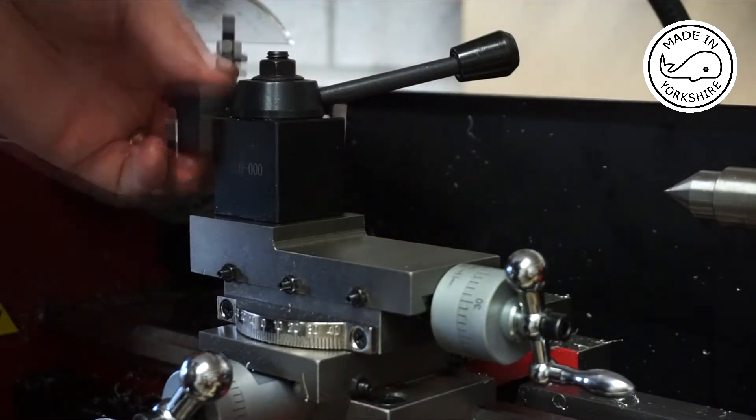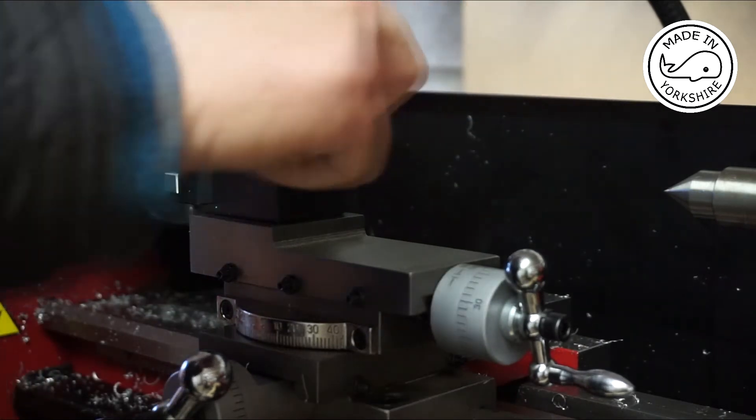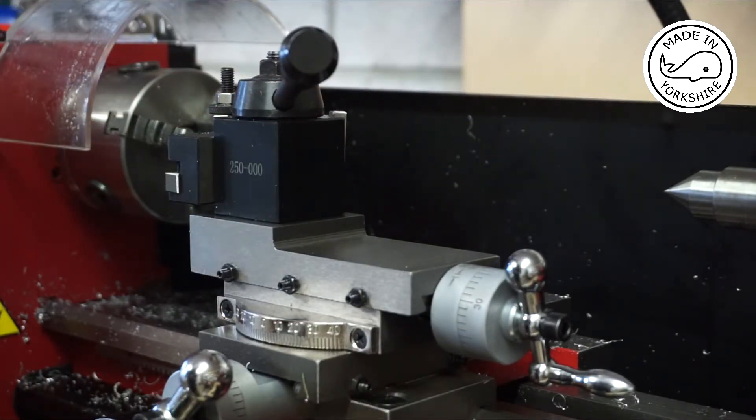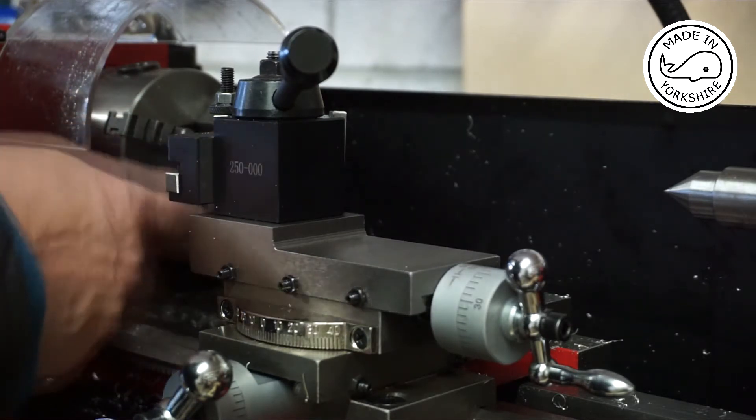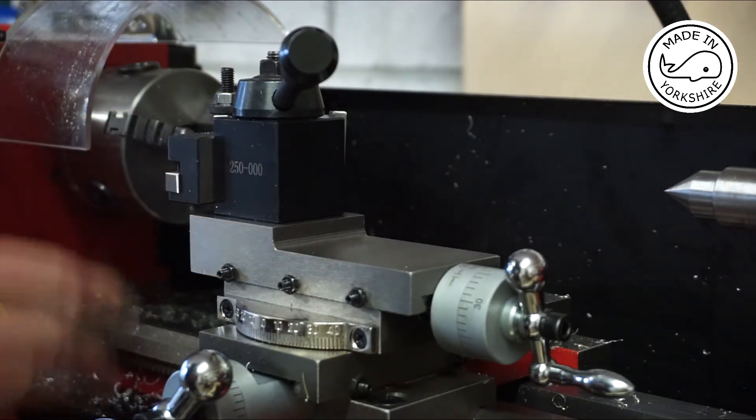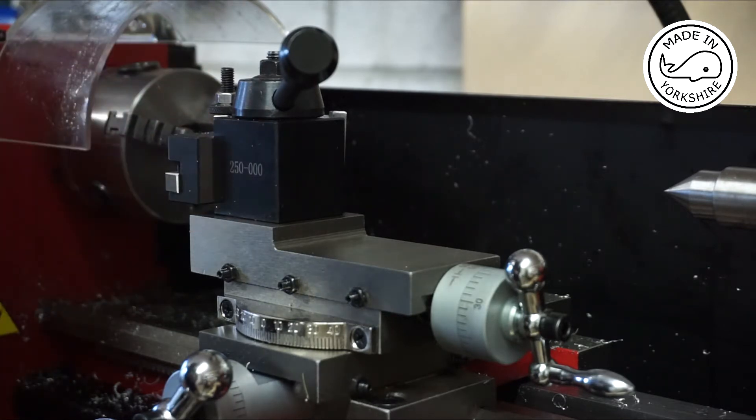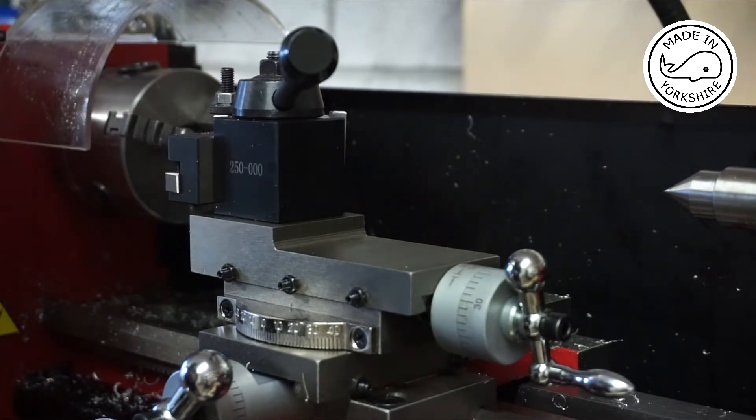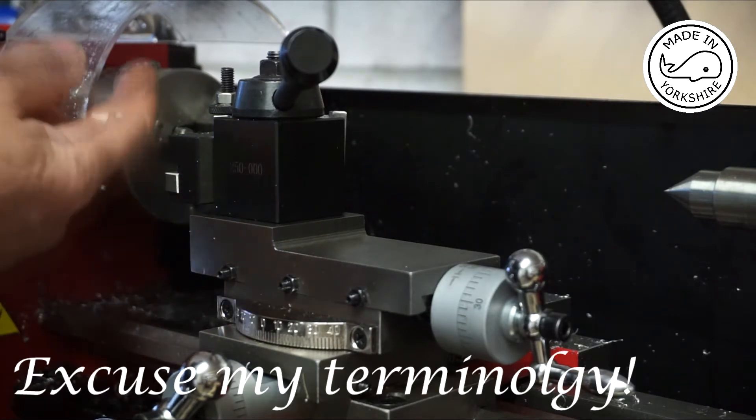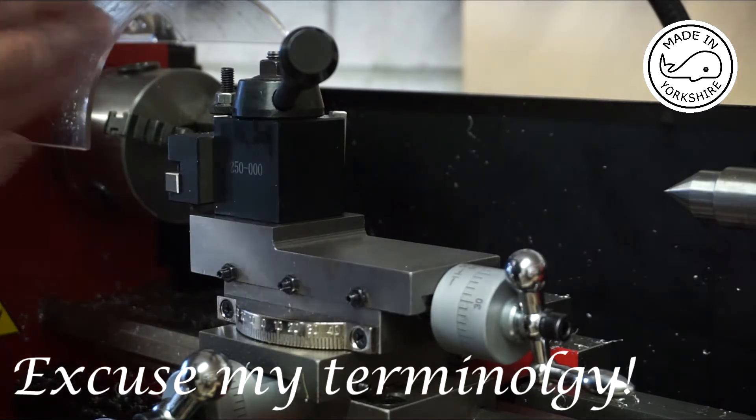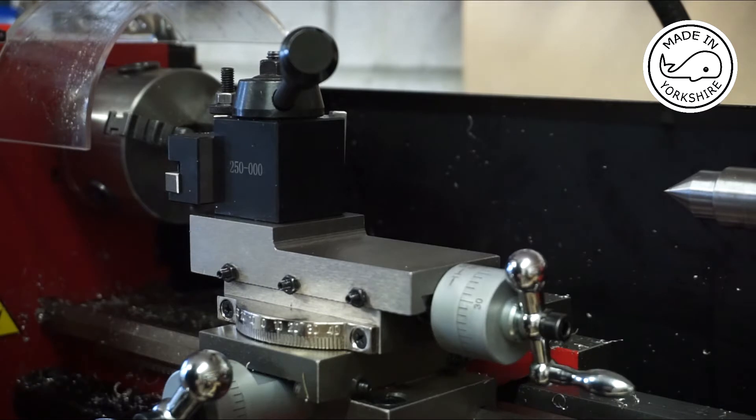It's just a matter of aligning the tool post up again. Placing the tool on this side. There you go. And when I do face off the end of any stock, it is spot on centre and there's no residue in the middle. It cuts exactly to the centre of the stock.